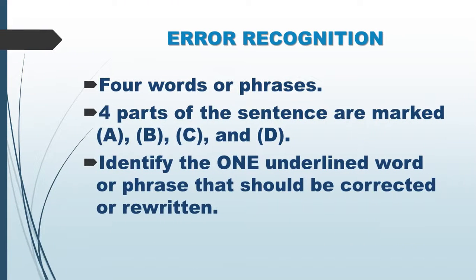Error Recognition: In this part of the test, each sentence has four words or phrases underlined. The four underlined parts of the sentence are marked A, B, C, and D. You are to identify the one underlined word or phrase that should be corrected or rewritten. Now, look at a sample question.